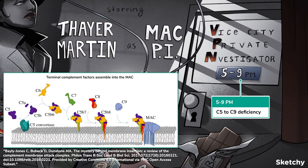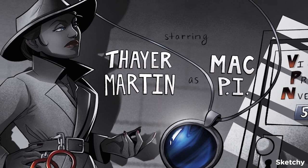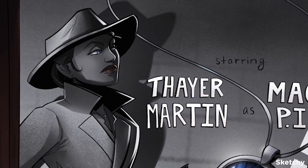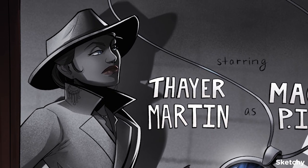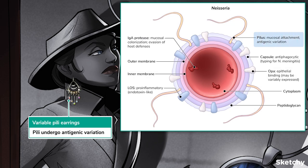Remember, MAC leads to ultimate destruction of the bacteria by poking holes in it, which causes osmotic flux and then lysis. Now let's move on to some of the virulence factors of Neisseria species. Neisseria's major virulence factor is its pili, hence these finger-like projections coming off of Mac's earrings. Pili allow the bacteria to attach to the mucosal surfaces, as in the pharynx. But these pili undergo frequent antigenic variation, which makes it difficult to neutralize the infection.